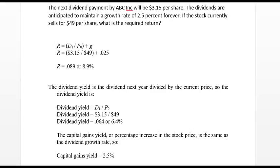A relatively simple formula is R, which is the required return, equal to D1 over P0 — the price today — plus G. So we have R equal to $3.15 divided by 49, plus 0.025, which is the growth rate. When you calculate that, it comes out to be 8.9%.